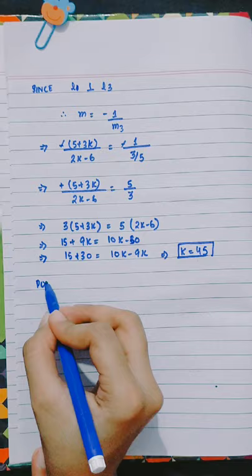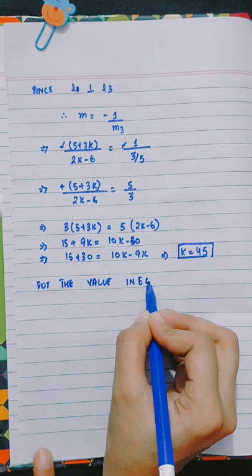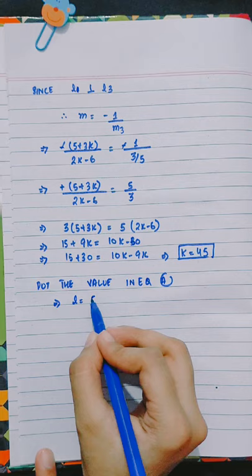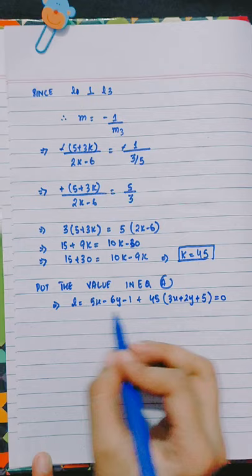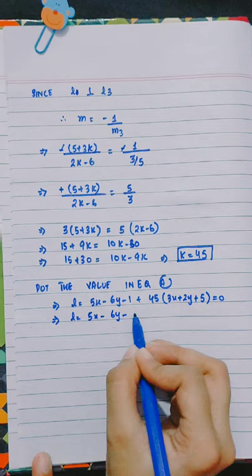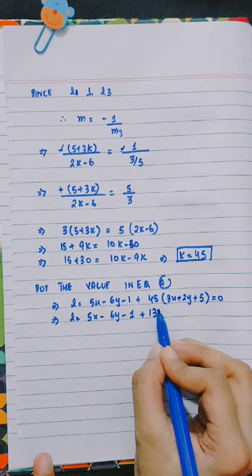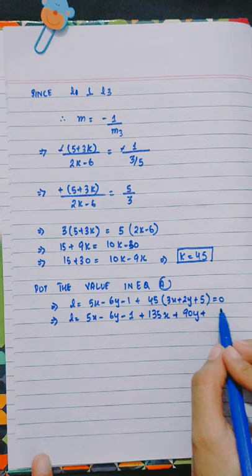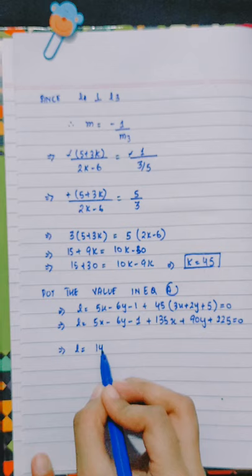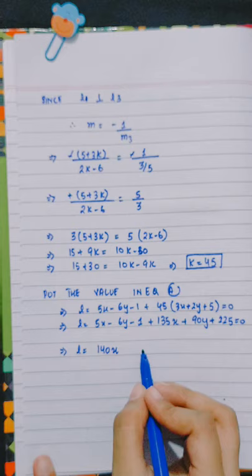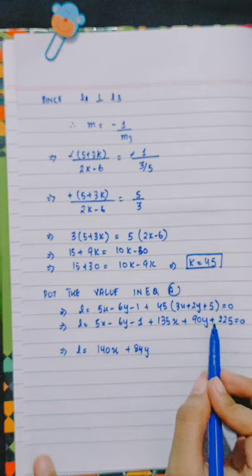Put the value k equals 45 in equation A: L equals to 5x minus 6y minus 1 plus 45 into 3x plus 2y plus 5 equals to 0. Expanding: 5x minus 6y minus 1 plus 135x plus 90y plus 225 equals to 0. Combining: 5 plus 135 gives 140x, minus 6y plus 90y gives plus 84y, minus 1 plus 225 gives plus 224 equals to 0.